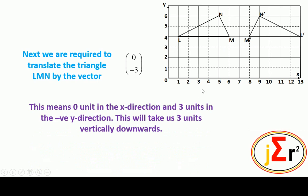This means that when we are translating by the vector (0, -3), it means that we are translating the triangle 0 units in the X direction and 3 units in the negative Y direction. This will take us 3 units vertically downwards.